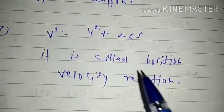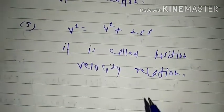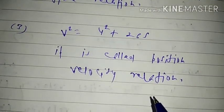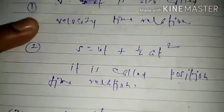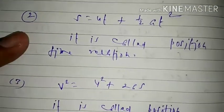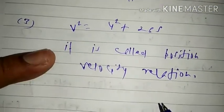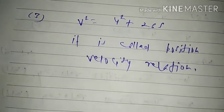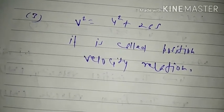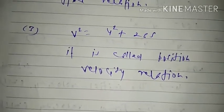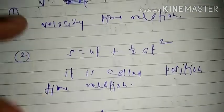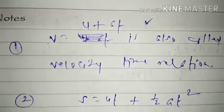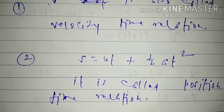Go through these facts two or three times and really learn what is velocity-time relation, position-time relation, and position-velocity relation. Now we shall graphically prove all three equations of motion one by one. Thank you very much.